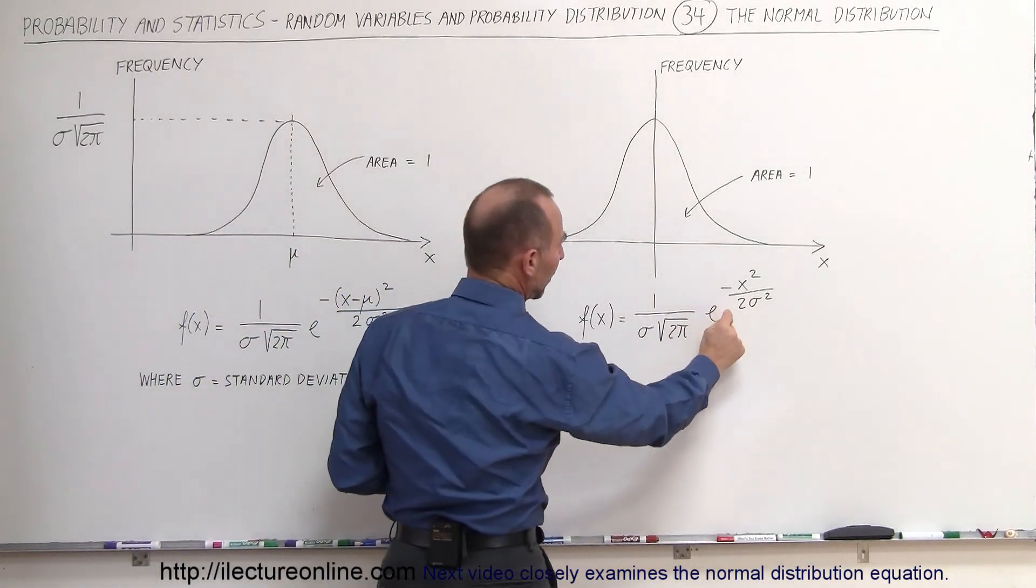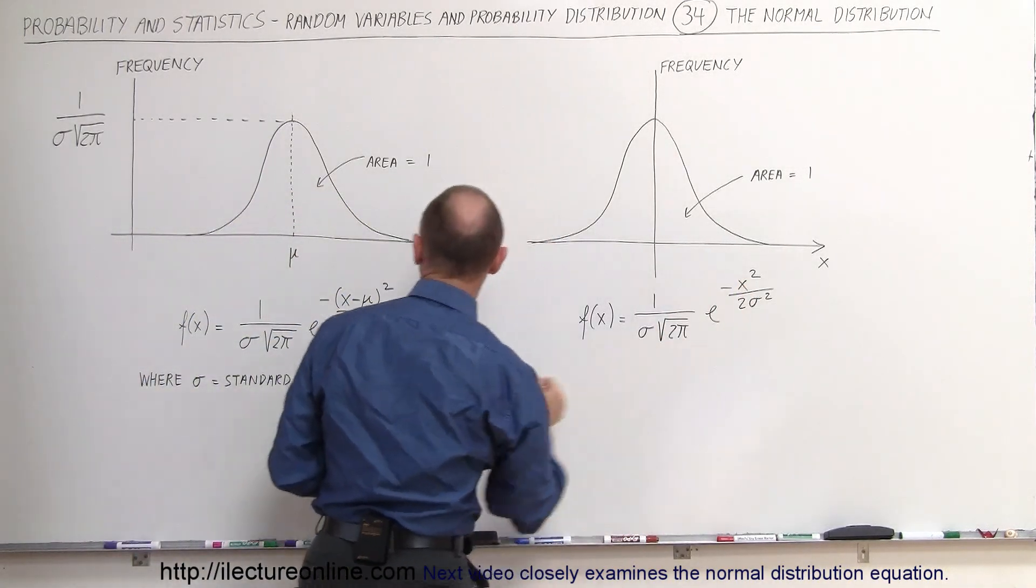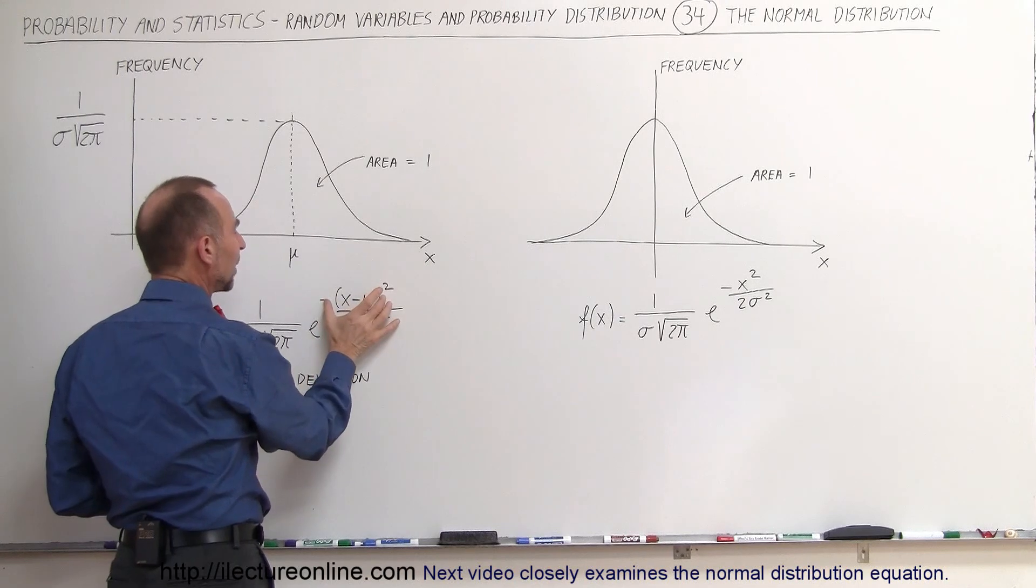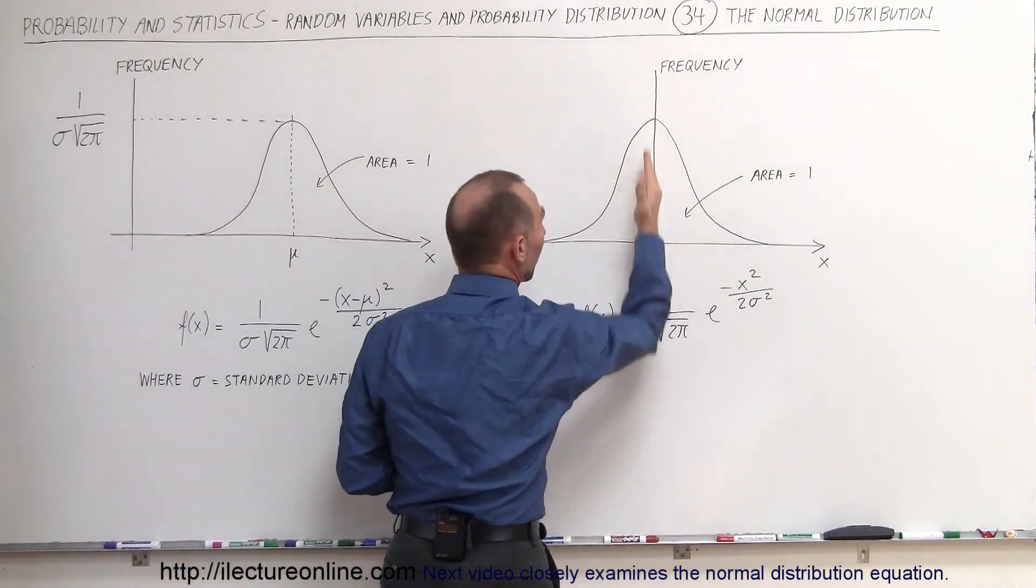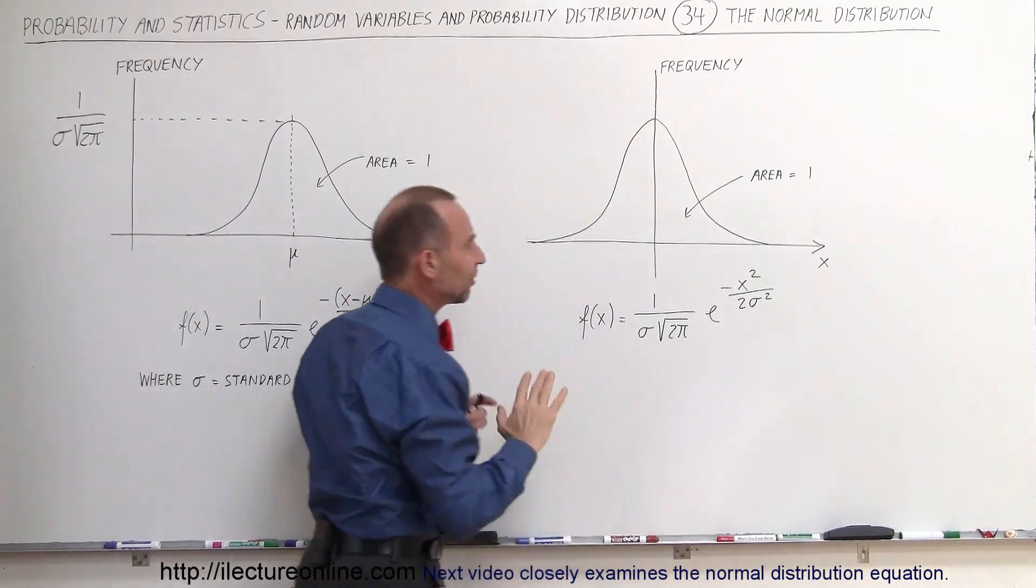Notice when we come over here that the equation here is e to the minus x squared instead of e to the minus x minus mu quantity squared, which simply means that it now centers it about the vertical axis right there. That's the only difference.